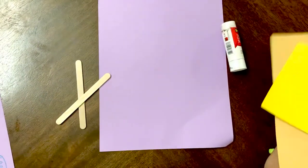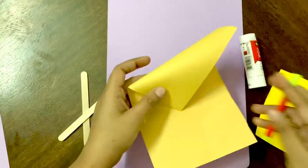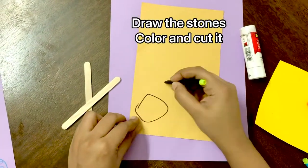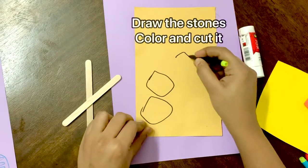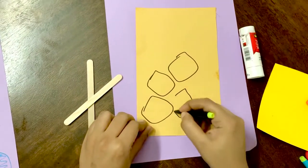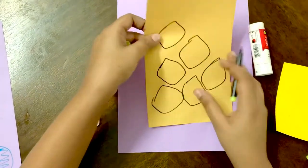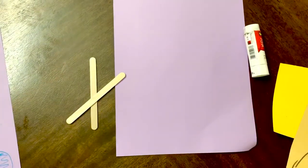First, let's draw the stones. Color it with brown color and then cut it into pieces, something like this.